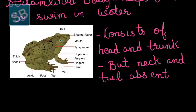The anterior most part of the head consists of nostrils. Moreover, it consists of laterally protruding eyes. On the mid-dorsal line in between two eyes there is a brown spot. This mid-ear is represented by a tympanic membrane. On the ventral side, the mouth is present.